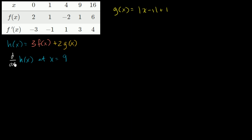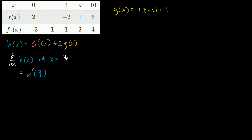So let's think about it. Another way to write the derivative of h of x with respect to x at x equals 9 — this is equivalent to h prime of x when x equals 9. So h prime of 9 is what this really is.